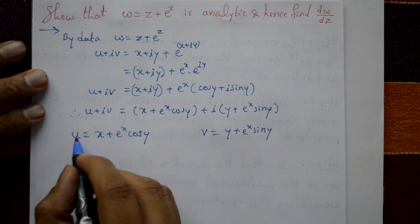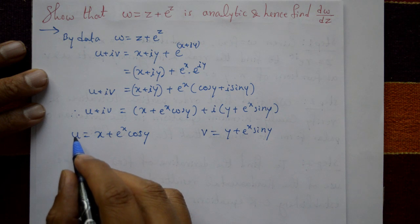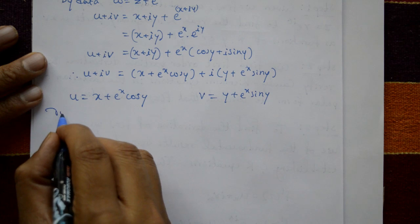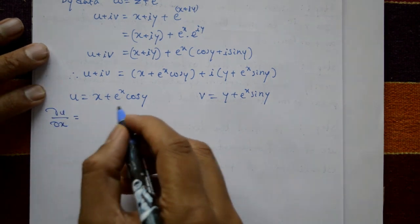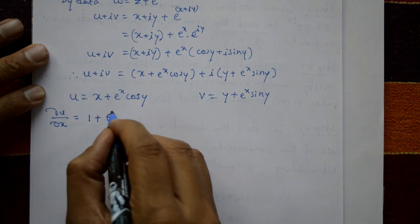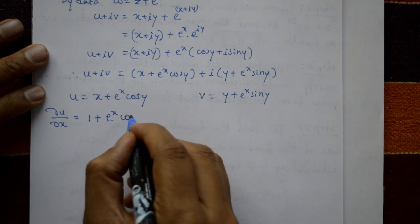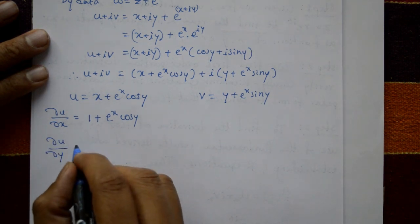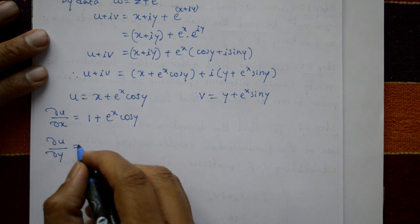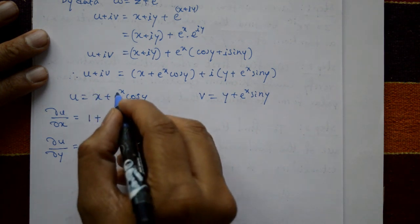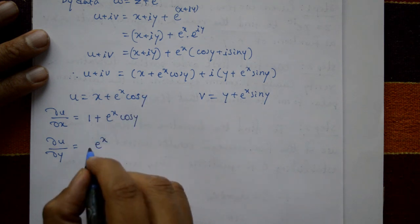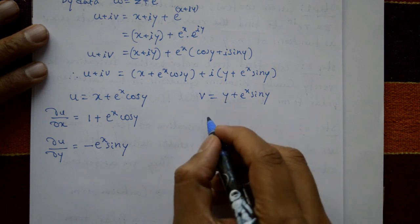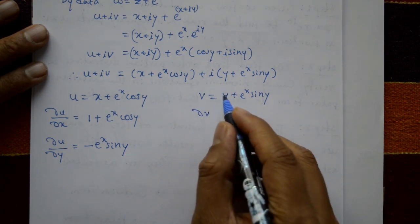Now differentiate u with respect to x and y partially. ∂u/∂x = 1 + e^x cos y. Differentiating u with respect to y: e^x is constant, so ∂u/∂y = −e^x sin y.